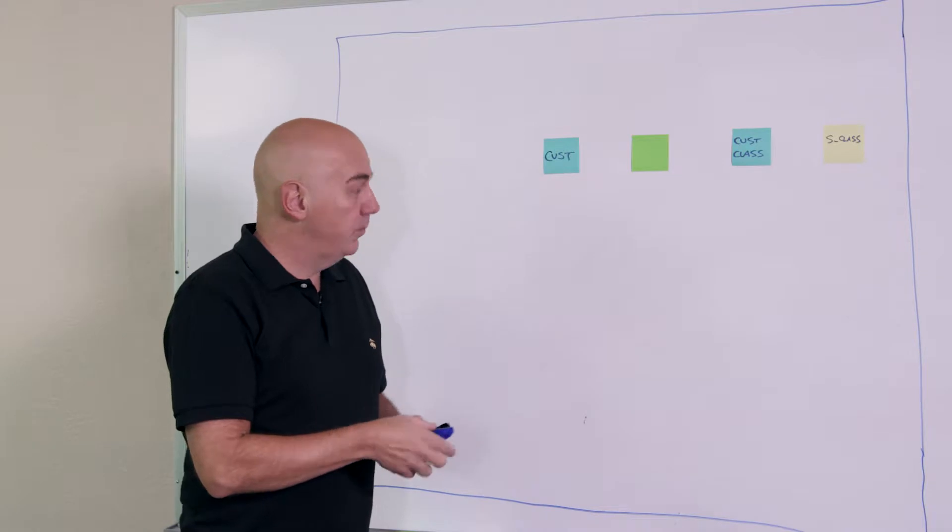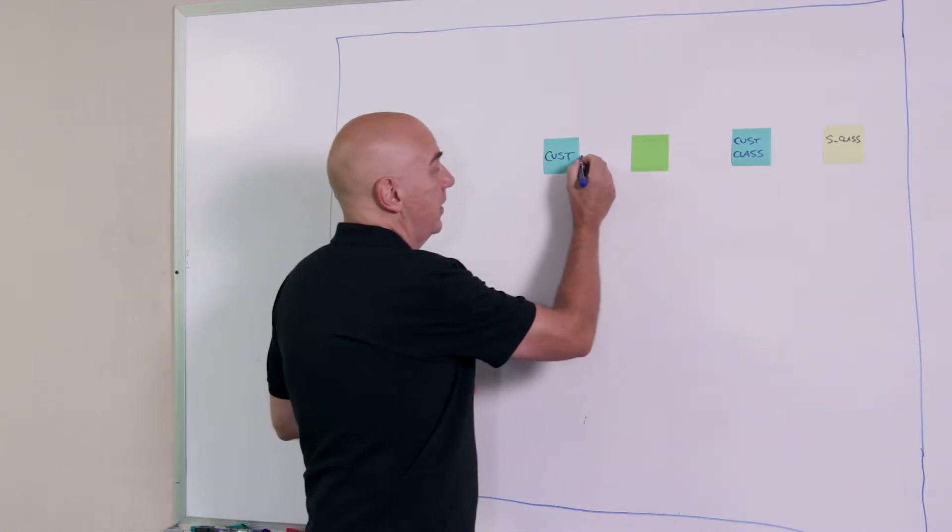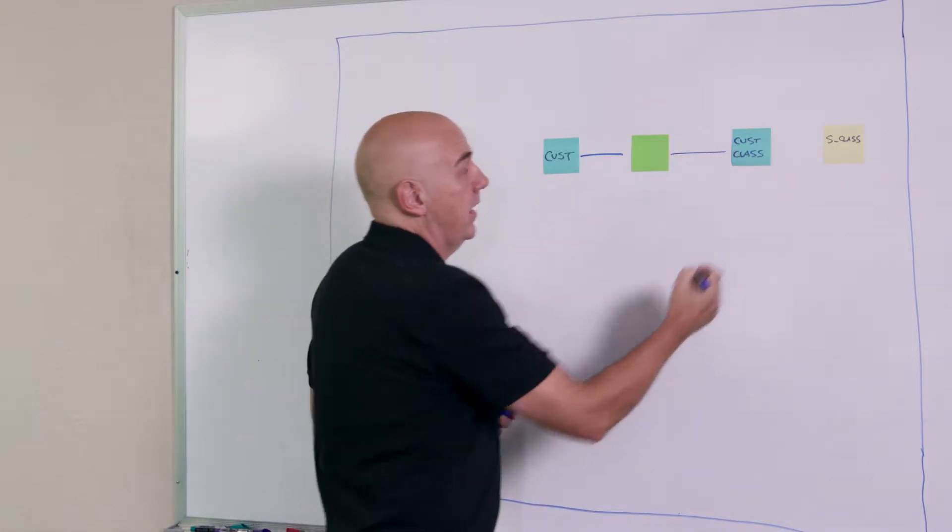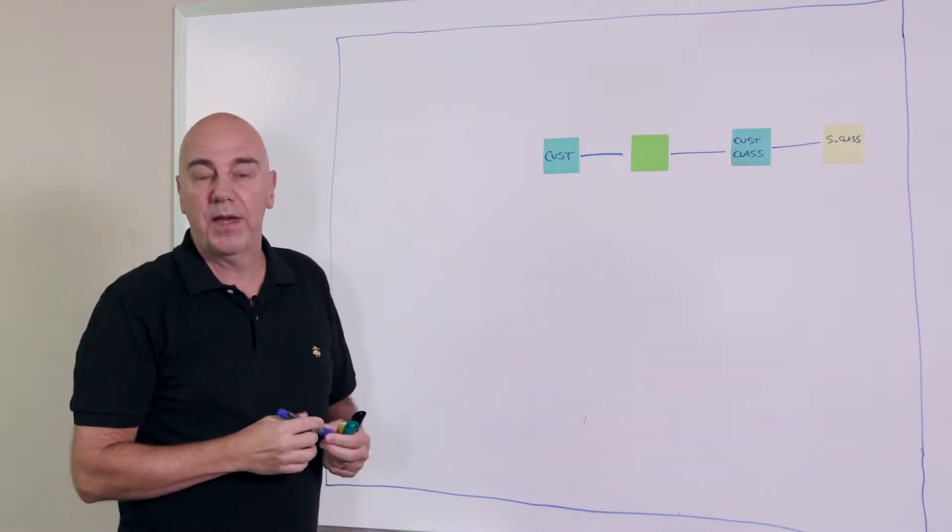Okay, so in the same example, we can see here we've got a customer. They are connected to a customer class, and then the class is described in the satellite. So this is basically the pattern we're working with.